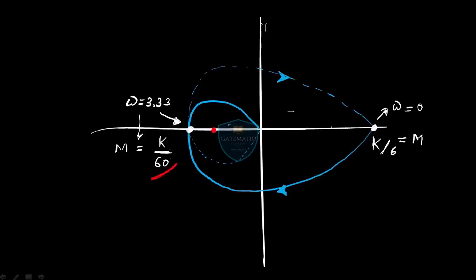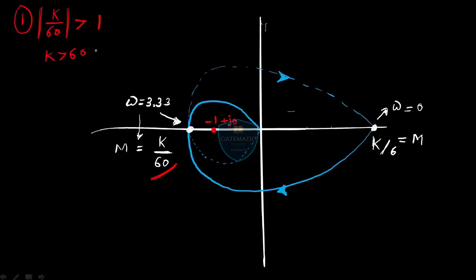I don't know where k/60 lies — it may be inside or outside the critical point. Case 1: the −1+j0 point is inside the Nyquist plot, meaning k/60 is greater than 1 in magnitude, so k is greater than 60. In this case the critical point is encircled. The direction of the plot is clockwise.